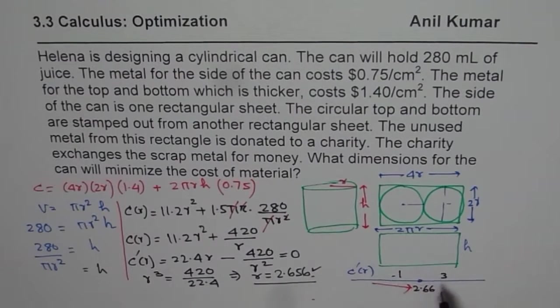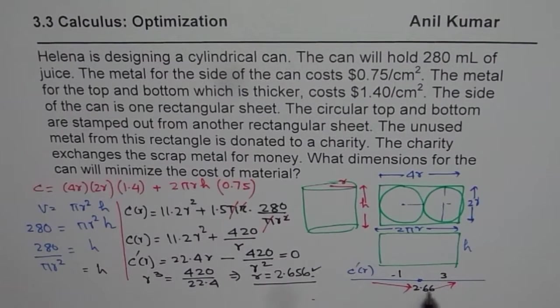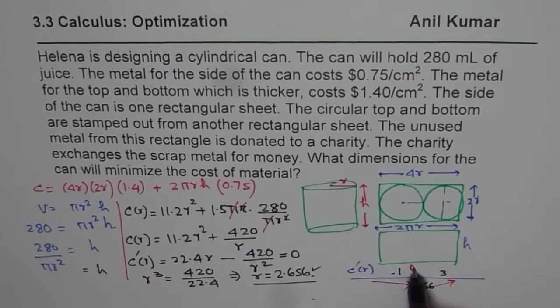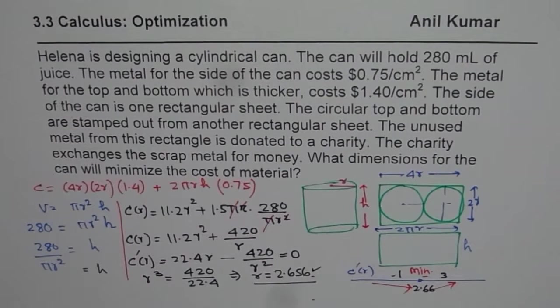So it will be positive. So it will be positive. So, because for 2.6 it is 0. So that gives you minimum. Do I get the idea? So that is how, basically, you need to solve the question.